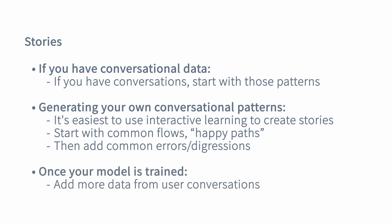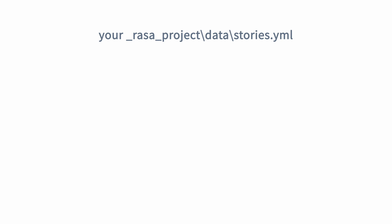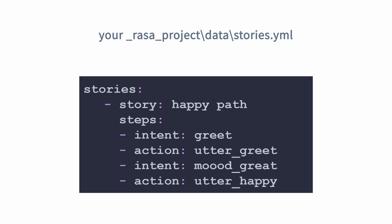Start with the conversation you want people to have with your assistant every time, then add flows where that doesn't happen. Once you have your happy path and a couple of things likely to happen in addition, as soon as you can, add more user data from actual conversations. In your RASA project by default you will have a folder called data, and in that folder a file called stories.yaml where you store the paths.